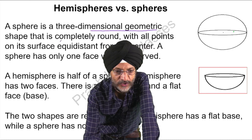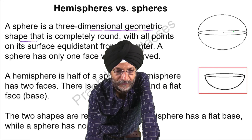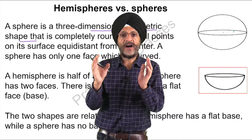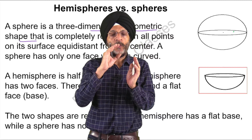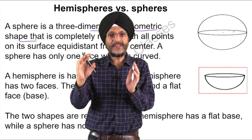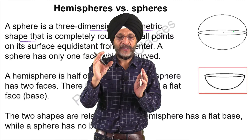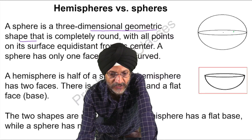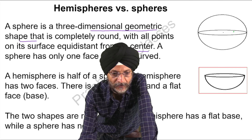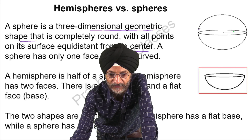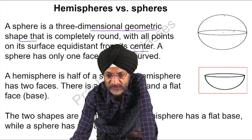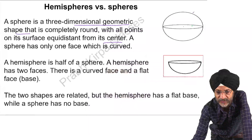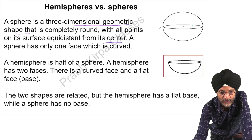Now, the real world examples of sphere. You can see here that a basketball as well as a tennis ball is the common example of a sphere. Sun and Earth, though they are not a perfect sphere, their shape closely resembles a sphere.